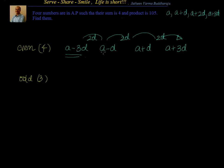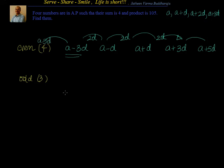So for even counts: if it is 2, take a minus d and a plus d. If it is 4, take a minus 3d, a minus d, a plus d, a plus 3d. If it is 6, extend further with a minus 5d and a plus 5d. That's the pattern for evens.